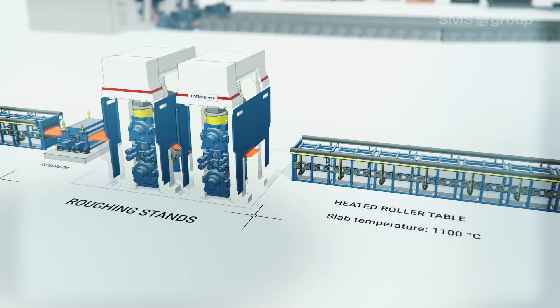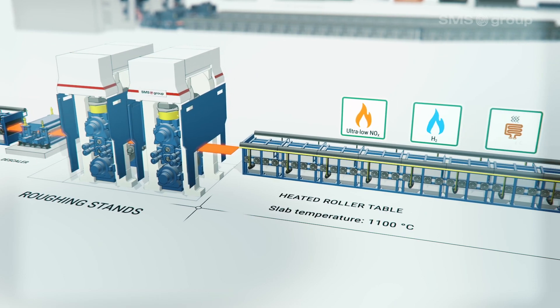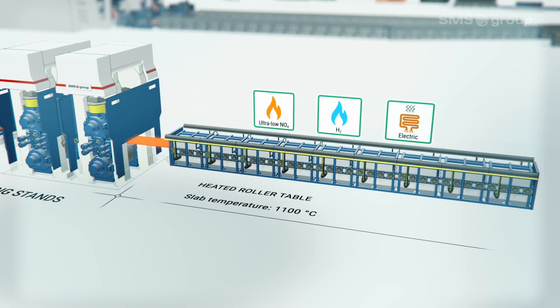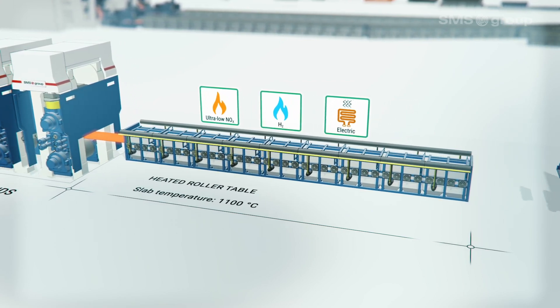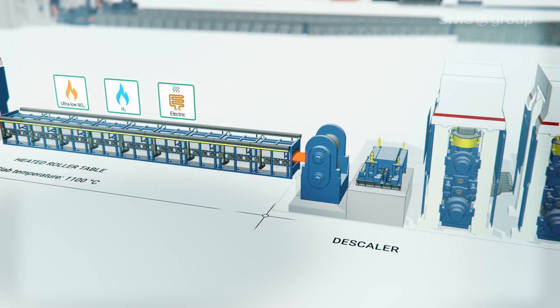Both heated roller tables allow the use of environmentally friendly energy sources. It enables independent operation of the roughing mill and the finishing mill. A second stage of high-pressure descaling ensures optimal surface conditions for the downstream finish rolling process.